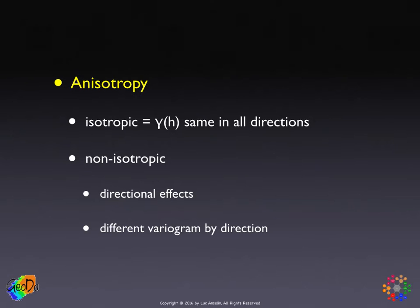Anisotropy also means we might need a different model in each direction, which complicates everything. Instead of one model that works for all directions, we might have a separate model for each of the four quadrants, as we've seen before.